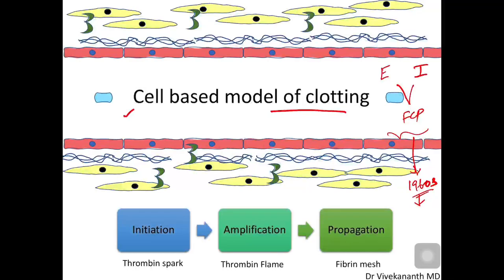The 1960 model is mainly based on in vitro experiments and in vitro clotting mechanisms — like how blood clots in a test tube. Whereas this cell-based model is more physiological in the sense that it describes how clotting happens inside the body in a real human being. That's why this cell-based model is more favored, and all the latest pharmaceutical developments and new drug development are depending on this cell-based model.